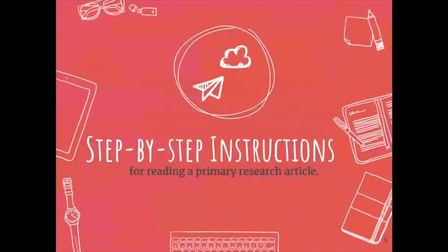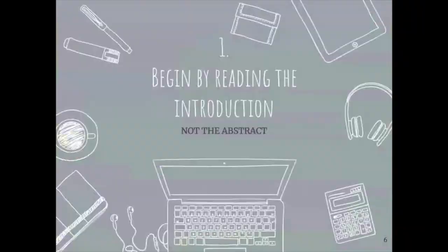Now we're going to go step by step through how one should read a primary research article. When you get a research article — maybe the gravitational waves article from this week's lessons — you'll see it usually starts with the abstract. This is a little misleading. We don't generally want to start by reading the abstract because it gives you the whole overview of the paper, including the conclusions, making it difficult to follow the authors' process step by step.